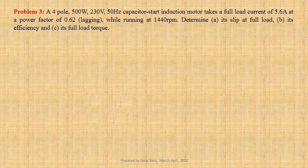A 4-pole 500 watt 230 volt 50 hertz capacitor start induction motor takes a full load current of 5.6 ampere at a power factor of 0.62 lagging, while running at 1440 revolutions per minute. We have to determine its slip at full load, its efficiency and its full load torque. Let us first write down the given data.